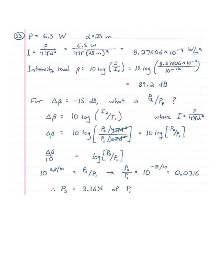Number 55: the band at an outdoor party pumps out sound energy at the rate of 6.5 watts. Neighbors 25 meters away complain about the din. What is the intensity level at the neighbor's place? Power is 6.5 watts, distance is 25 meters. Intensity equals power over 4 pi distance squared — plugging in gives 8.276 times 10 to the negative 4 watts per meter squared. The question asks for intensity level, so plugging into the intensity level equation, we get 89.2 decibels.